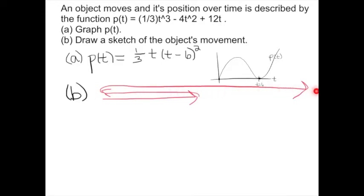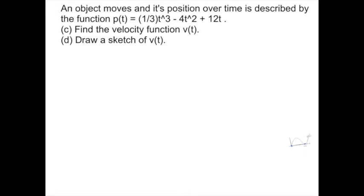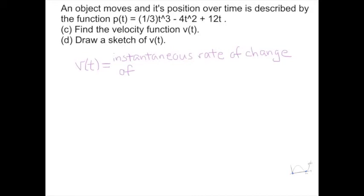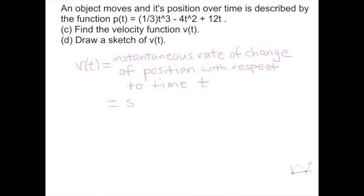Let's label: this turnaround point occurs at t = 6. Position equals 0 at t = 0. Now let's talk about the velocity. How fast is the object moving, given that we know its position is described by this function? Velocity is the instantaneous rate of change of position with respect to time — it's how fast the position is changing over time, instantaneously. In other words, velocity is the slope of the tangent line on the position graph. How do we calculate it? We take the derivative.